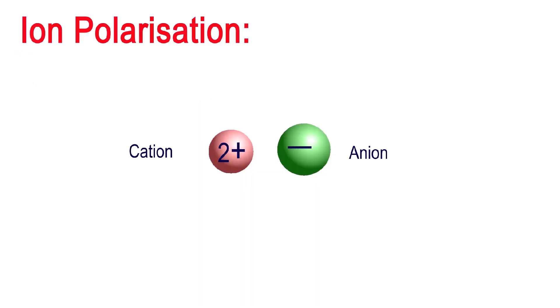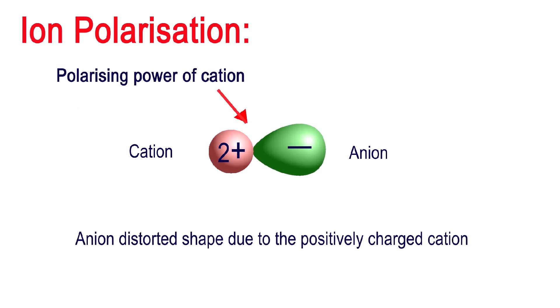The electron cloud around anions is sometimes attracted toward the positively charged cations, resulting in the distortion of the spherical shape of anions. We call this power of attraction the polarization power of cation.